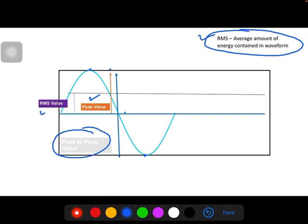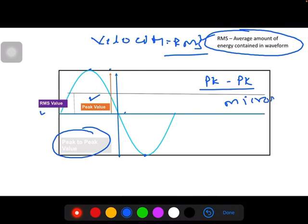Generally for vibration velocity we prefer RMS velocity, because when RMS increases the overall energy of vibration increases. Peak to peak is generally used in displacement. In general, for bearings we use displacement in microns.